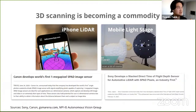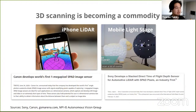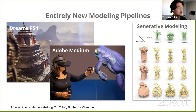In today's world, 3D scanning is increasingly becoming a commodity. iPhones come shipped with LiDAR sensors that give you depth information, and many research groups are developing mobile light stages, which let you capture high-fidelity geometry and materials using a lightweight setup. Companies like Canon and Sony are developing image sensors with depth sensing capabilities increasingly integrated into conventional imaging systems. This means artists are able to create high-fidelity assets easier than ever before.